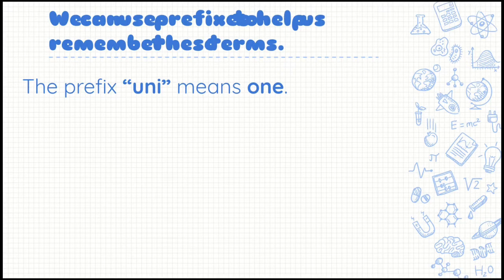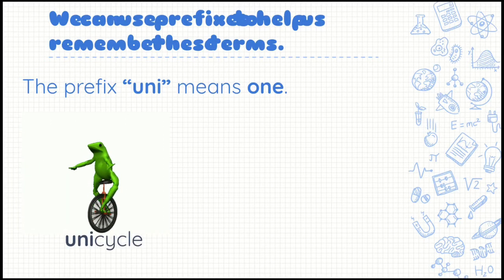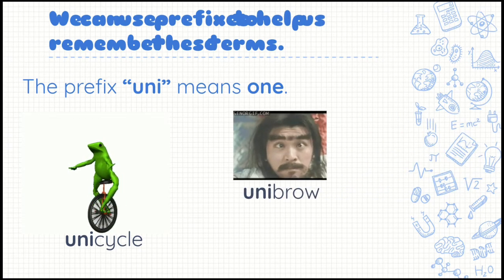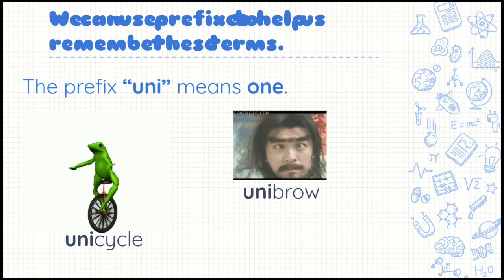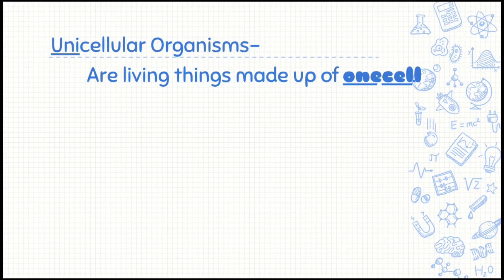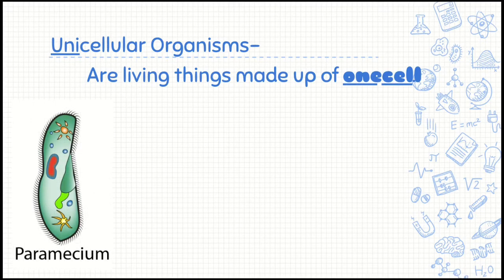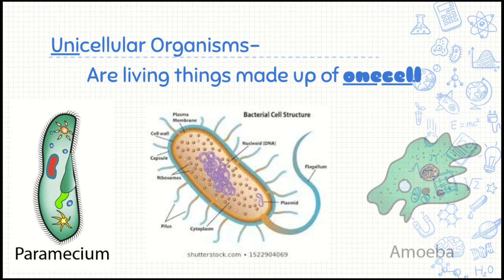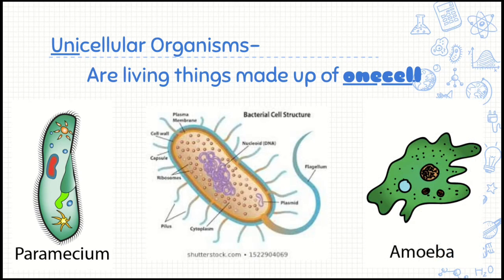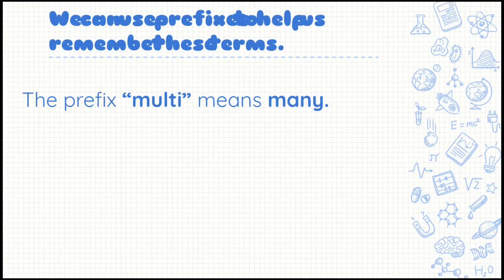We can use our prefixes to help us remember the terms. The prefix uni means one. For example, a unicycle — it's a bicycle with one wheel. And a unibrow — one eyebrow that connects in the middle across your face. Unicellular organisms are made up of one cell, such as your paramecium, your bacteria, and your amoeba. They're like a big blob most of the time.